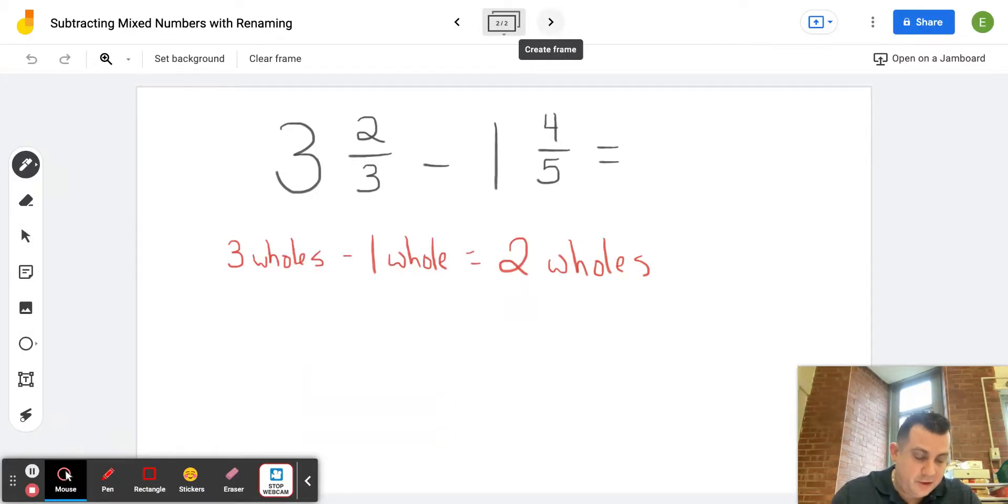Okay, so we have two wholes. So now underneath, I'm going to rewrite our problem, which will be two and two-thirds minus four-fifths because I subtracted the whole. So now you'll see when you do this, it's going to make this first mixed number easier to work with because I'm already subtracting the whole.